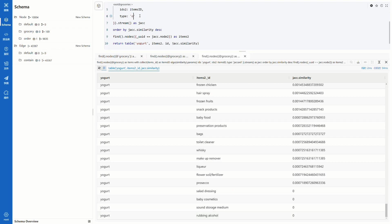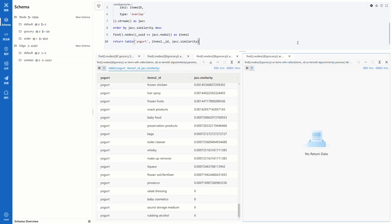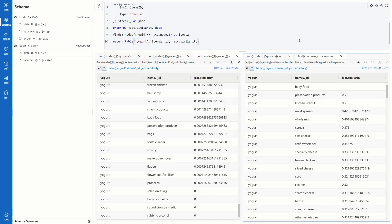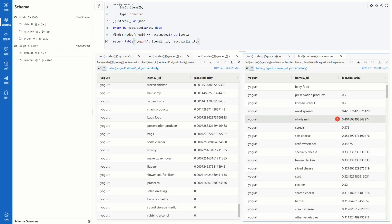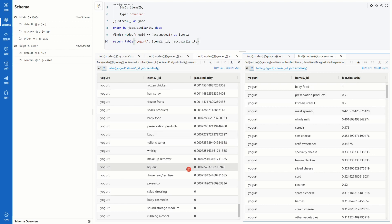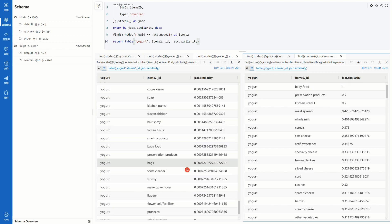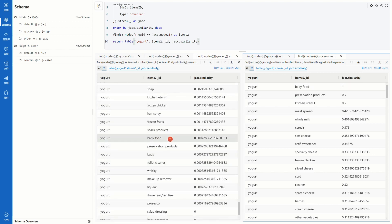For overlap similarity, you just need to change the type to overlap. Overall, the similarity scores are higher than Jaccard similarity. It's very eye-catching that the baby food has the highest score of one. But I remember that I saw baby food in the bottom of the Jaccard list. Yes, it's here. This may suggest that very few orders contain baby food.